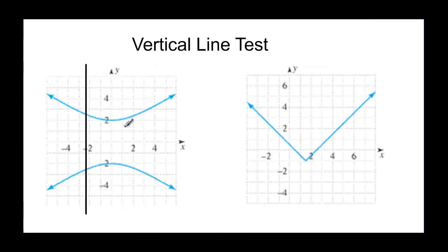Now if you're looking at a graph, one way that you can tell whether you have a function or not is to do the vertical line test. The vertical line test says that if I move this vertical line anywhere across my graph and it crosses my graph more than once, then it's not a function.